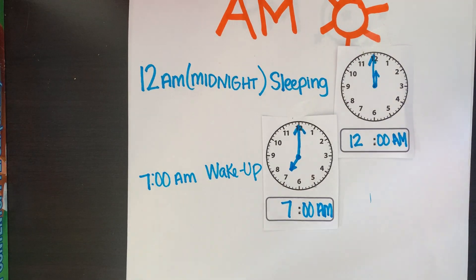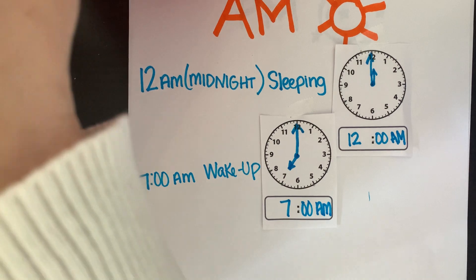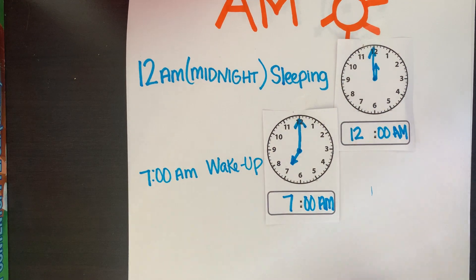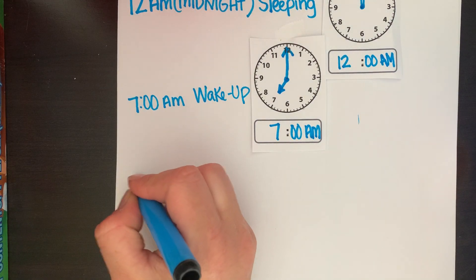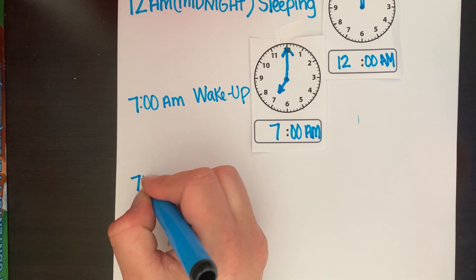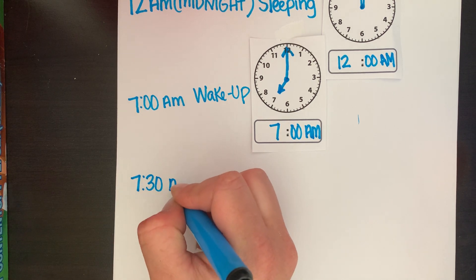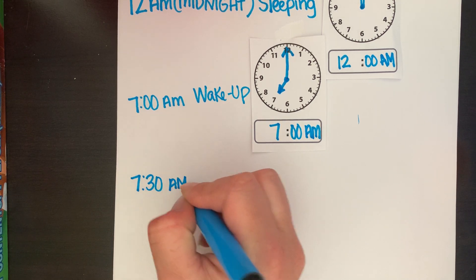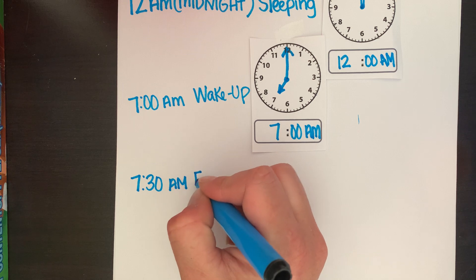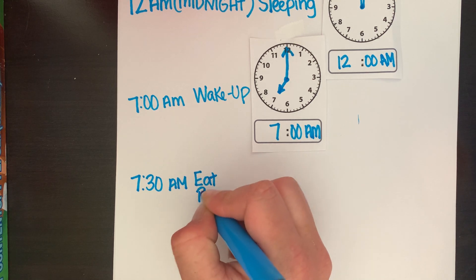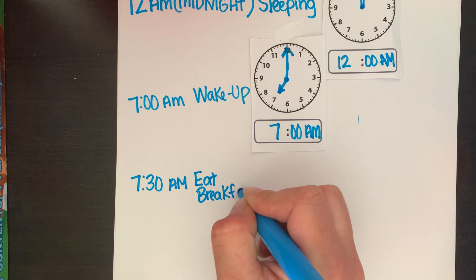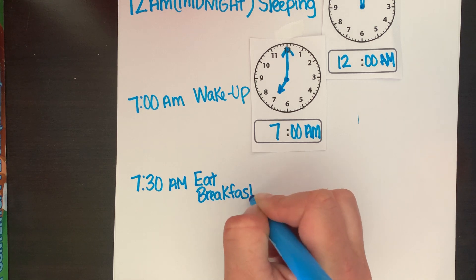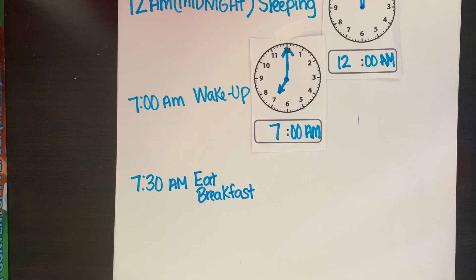And next, around 7:30 — I start to get hungry and I'm going to eat breakfast. I'm going to eat breakfast at 7:30 a.m. So on a clock, what that's going to look like — my hour is still seven, but let me think about my minutes first. I know this is my o'clock.